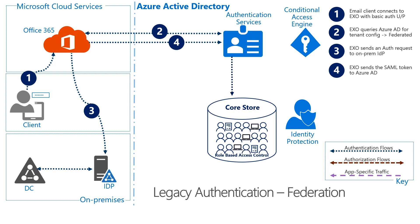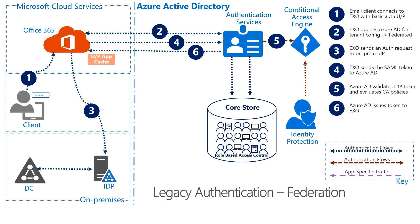The Exchange Online Service sends the SAML assertion token to the Azure AD authentication service. Azure AD then attempts to authorize the token from the Federation Server, and also evaluates conditional access policies — which for legacy authentication only allows blocking. Upon authorizing the user to access Azure AD protected resources such as Exchange Online, Azure AD issues a token and returns it to the Exchange Online back-end service, and this is strictly a server-to-server interaction. Now that Exchange Online has a valid token for the user, it returns the specific content to the user — in this case, the user's email.